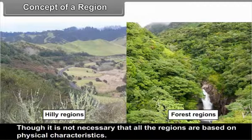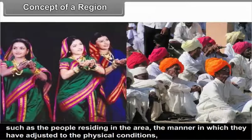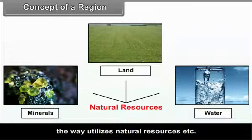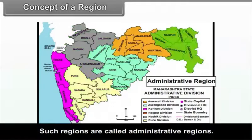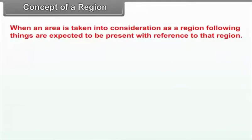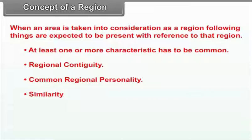Though it is not necessary that all regions are based on physical characteristics, regions based on socio-economic and cultural aspects are largely influenced by factors such as the people residing in the area, the manner in which they have adjusted to the physical conditions, and the way they utilize natural resources. Besides these, for ease of administration, areas are divided into suitable regions called administrative regions. When an area is taken into consideration as a region, at least one or more characteristics must be common, there must be regional contiguity, and a common regional personality and similarity.